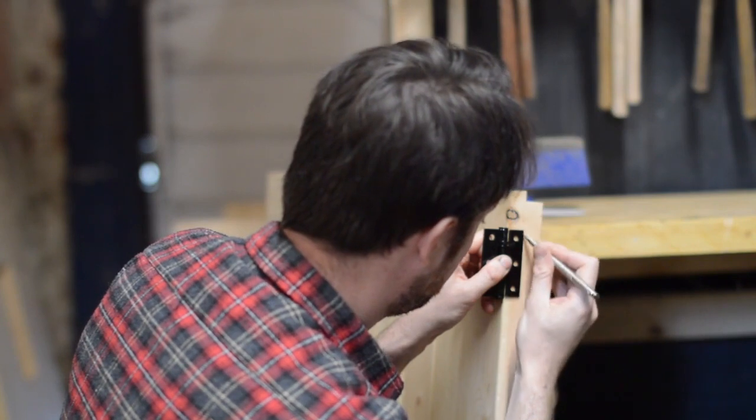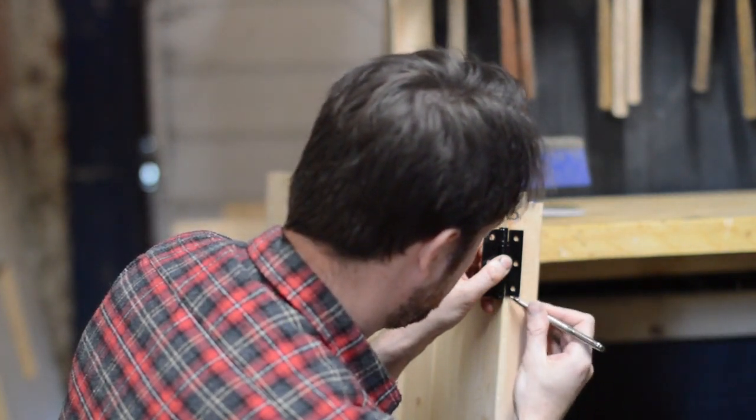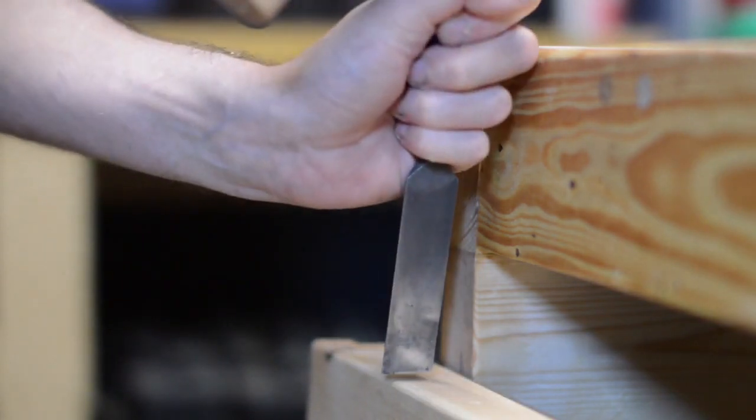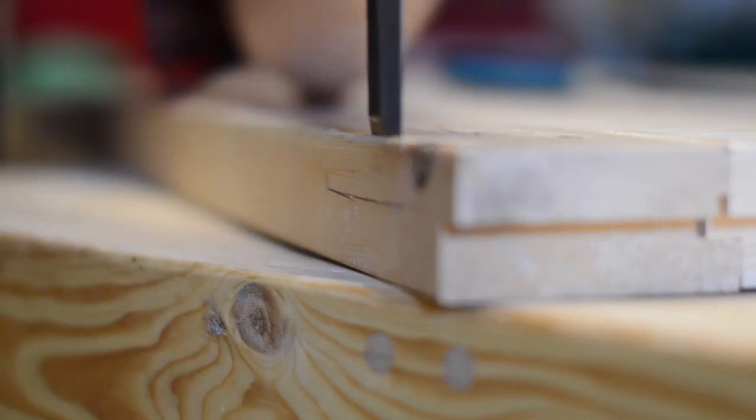A normal door you probably only have to worry about fitting two hinges, but as this is in two halves I've got to put four on. I found these black hinges on eBay as I'm trying to go for black hardware for everything on the door and the windows.